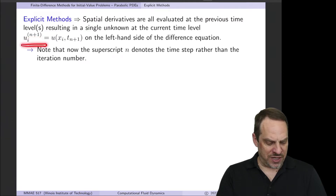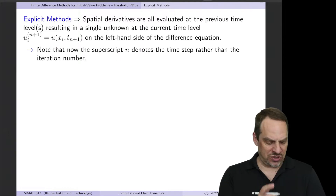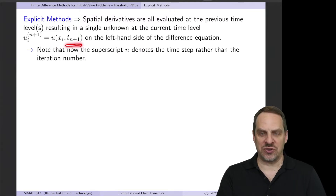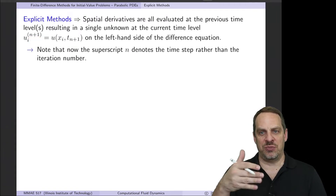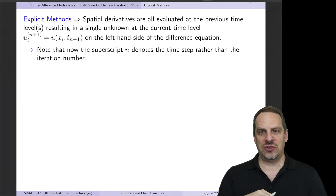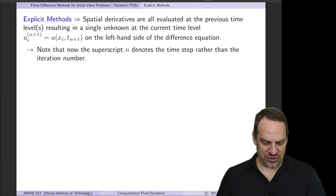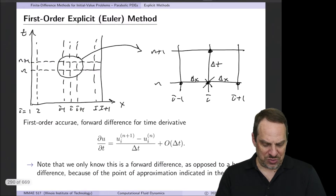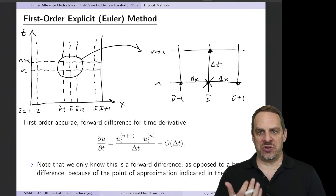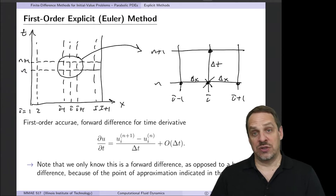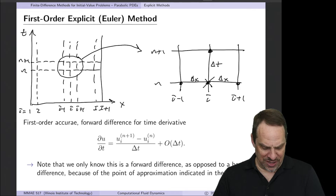So u sub i^(n+1) means u evaluated at x sub i and at the (n+1)th time step t sub n+1. In elliptic equations the superscript indicated the iteration number, not the time step — so we're now using that same notation to mean the time step. The first-order explicit method is also known as the Euler method, because it was developed by Leonard Euler long before digital computers — meaning people used to do this by hand.